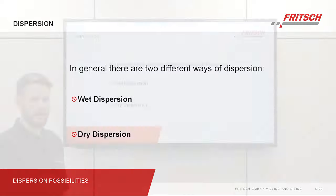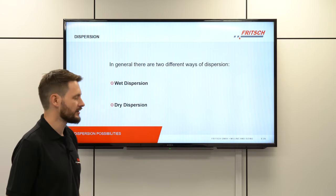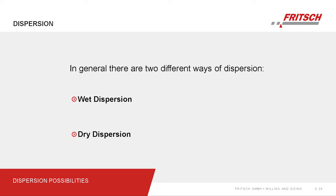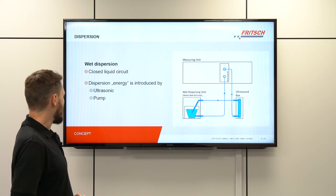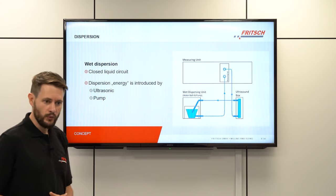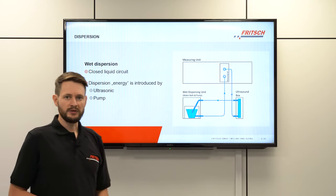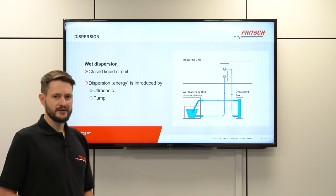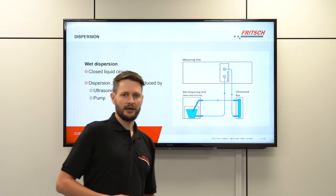There are two different ways of dispersing a sample: wet dispersion, which we've already shown, and dry dispersion. With wet dispersion we have a closed liquid circuit where our dispersion with the sample material flows and repeatedly passes through the measuring cell to be measured by the laser. The energy introduced to properly disperse the sample and minimize preparation error is the ultrasonic applied in the ultrasonic box, plus the pump which circulates the liquid through the system.